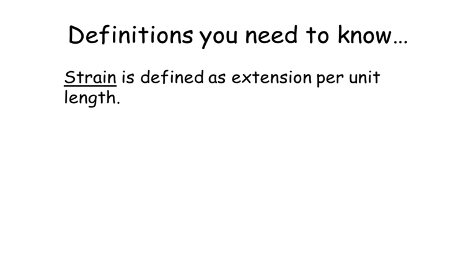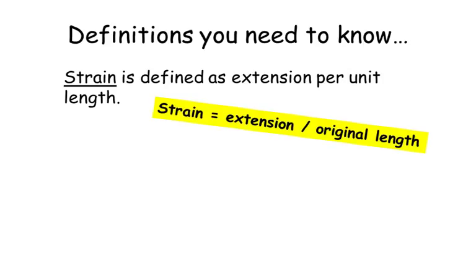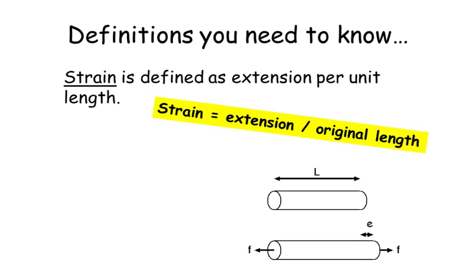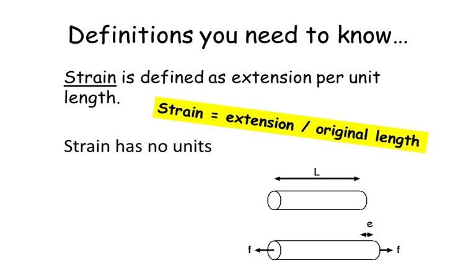Another definition you need to be aware of is strain. Strain is defined as the extension per unit length. The equation to calculate strain is the extension of the material divided by the original length. Here we've got the original length of our material, and if we put it under some kind of tensile stress, it's going to extend by a small amount e — that's the extension. Because both extension and original length are measured in meters, strain has no units.